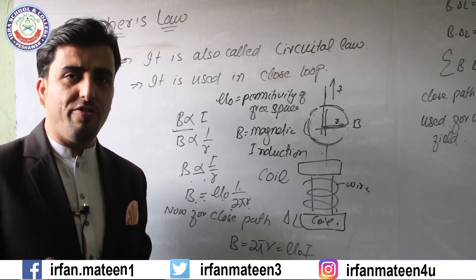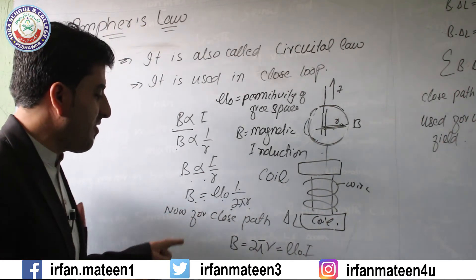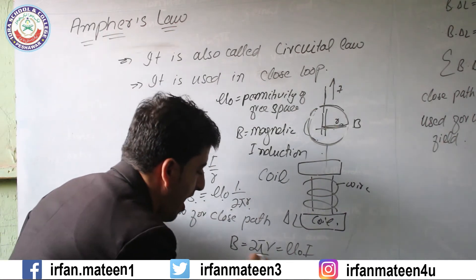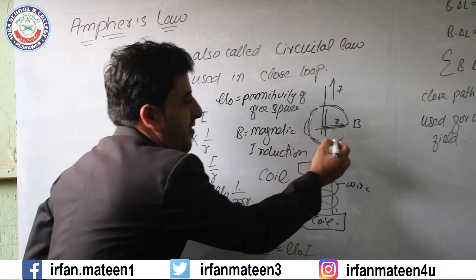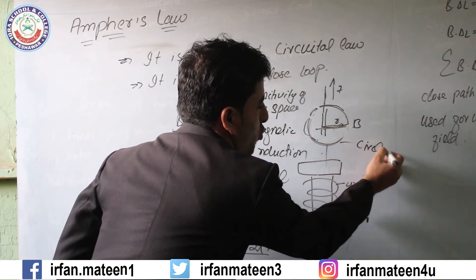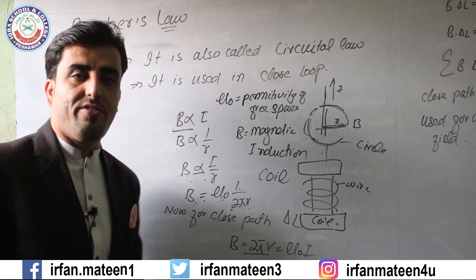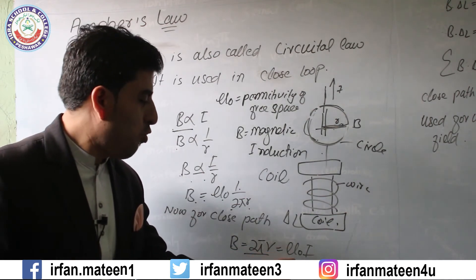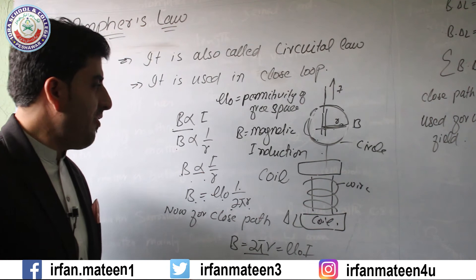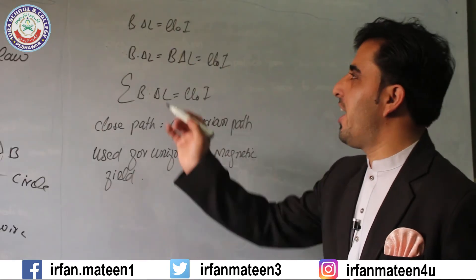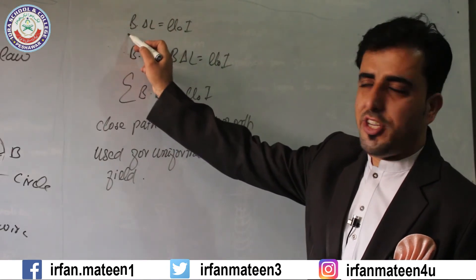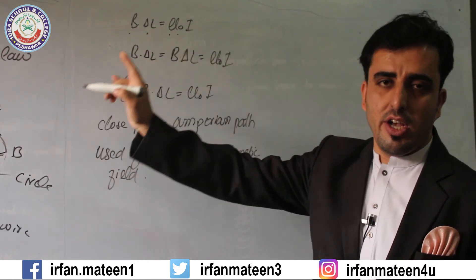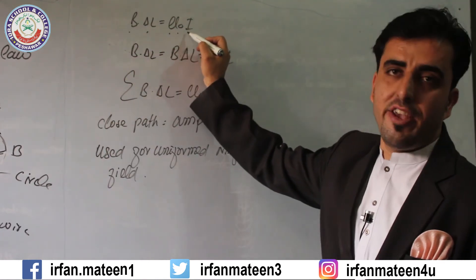For the closed path, delta l — the length also changes. For this closed path, B times 2πr equals mu naught times I, because it is also a circle — in mathematics, the circumference is 2πr. So B times delta l equals mu naught times I, where B is magnetic induction and I is the current.